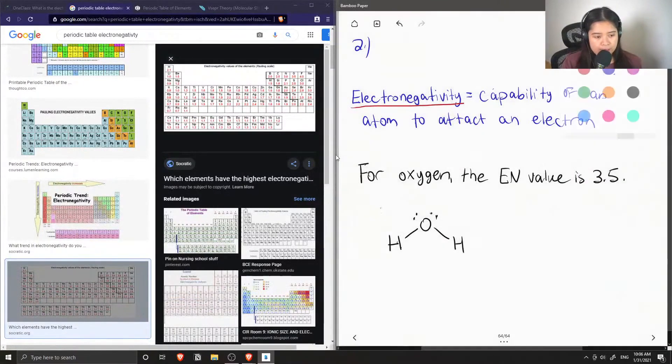So because oxygen is more electronegative than our hydrogens, it attracts the electrons more than the hydrogens do. So this causes a dipole moment in a water molecule.